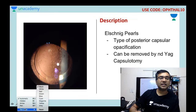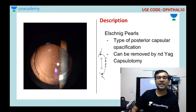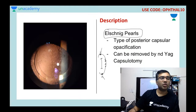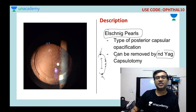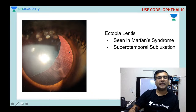This clinical picture shows Elschnig pearls. After IOL implantation, residual equatorial lens cells can migrate to the posterior capsule and become opacified — this is called Elschnig pearls or posterior capsular opacification (PCO). It is easily treated with Nd:YAG laser capsulotomy.